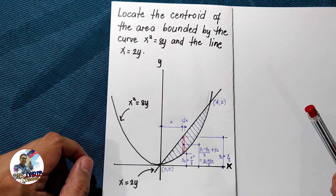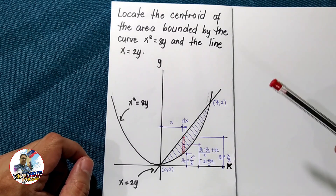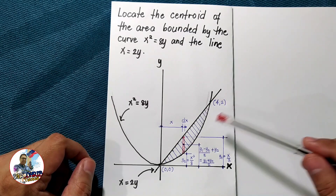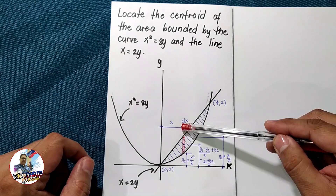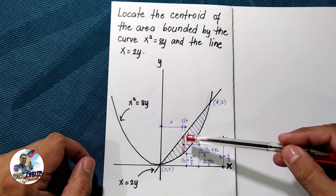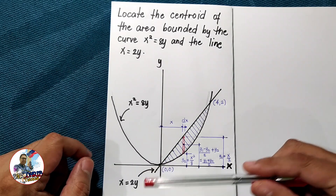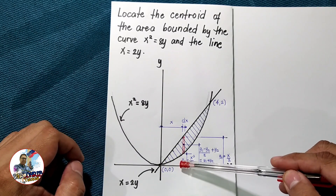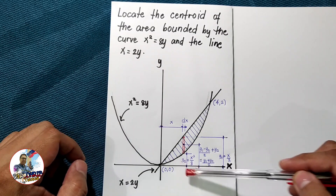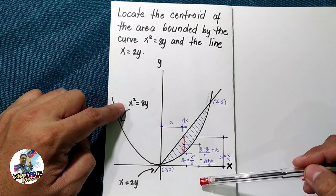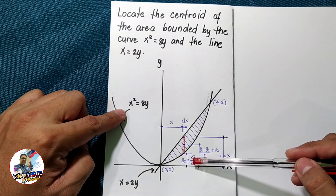In solving problems by integration, we consider a vertical strip or horizontal strip — that is, a differential area. Here I'm taking the vertical strip, so this dimension is dx along the x-axis. The distance of the centroid of this differential area from the y-axis is x. Along the y-axis, this strip is bounded above by the curve x² = 8y, giving y₂ = x²/8, and below by y = 0, so the height is simply x²/8.